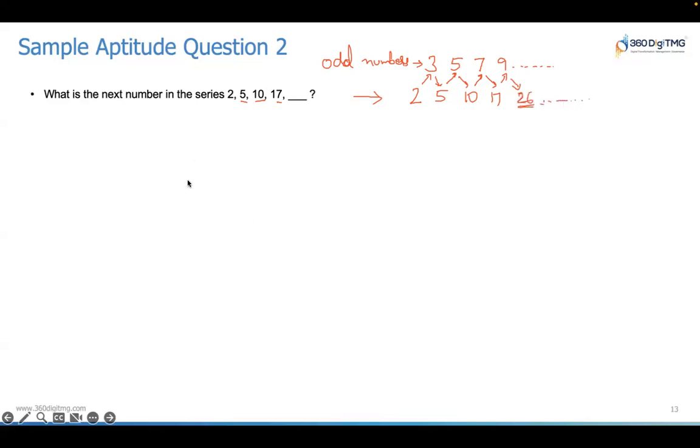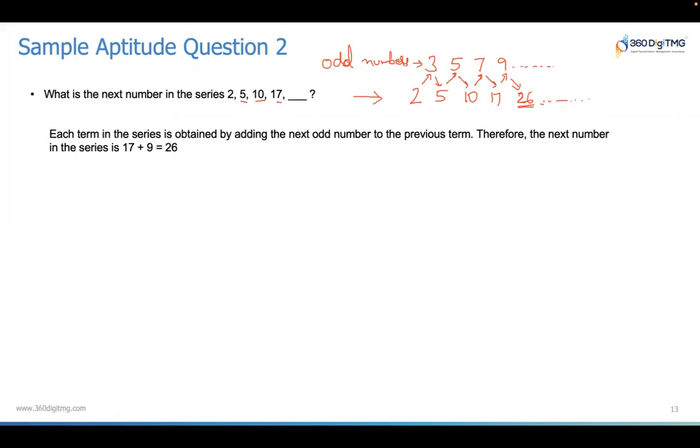So you have to think slightly beyond because what will be the next number in the series would not be straightforward. It'd be tricky like this. So there we go. This is the second sample aptitude question. Questions of this kind would appear on your exam.